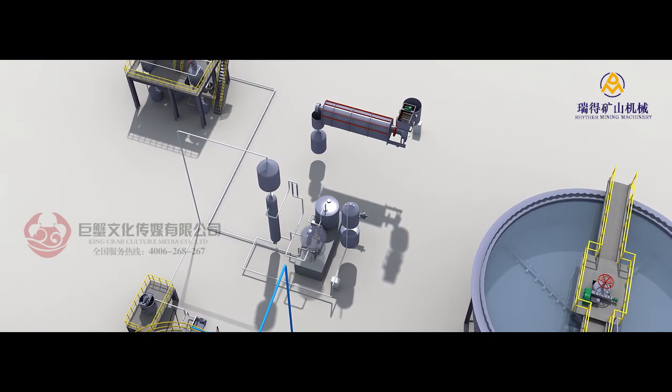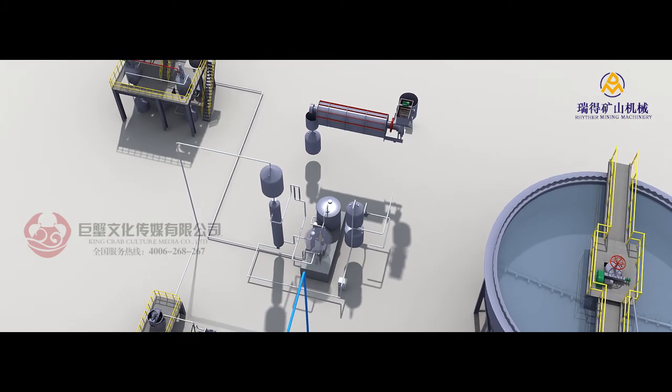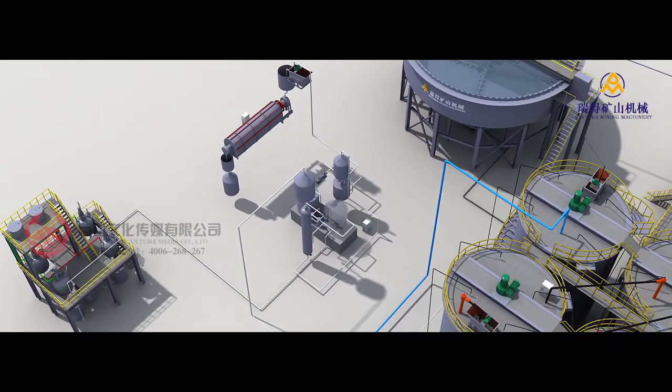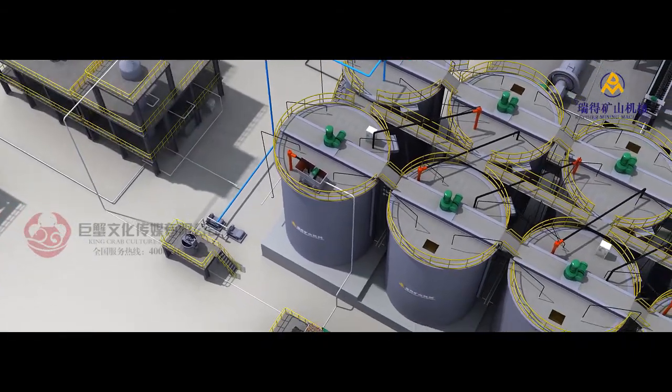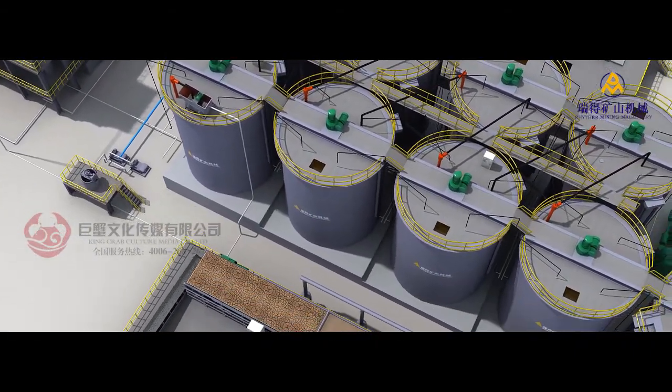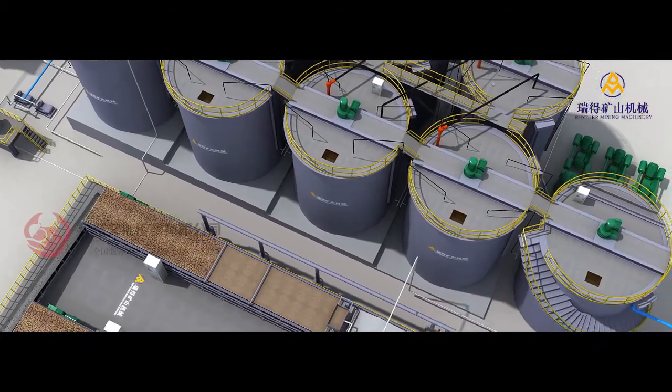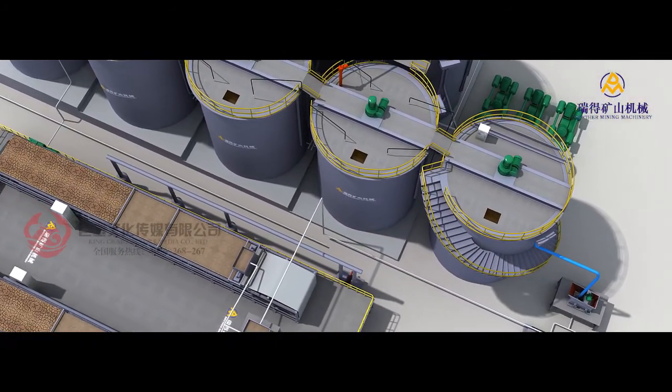Gold mud will then be transferred to smelting workshop. Electrolyte will go back to storage tank of stripping liquid while lean carbon will go to active carbon regeneration kiln for regeneration. After desorption, the activated active carbon will go back to the process for continuous use.